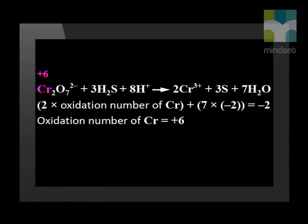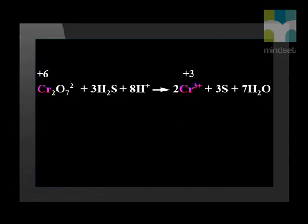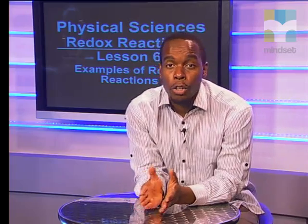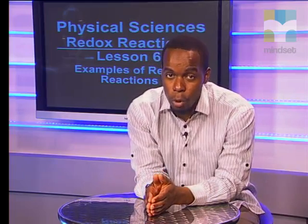Let's analyze this equation. We can calculate that the chromium atom in the dichromate ion has an oxidation number of +6, while on the product side the chromium ion now has an oxidation number of +3. Since the oxidation number of the chromium ion has become less positive, it has gained electrons. Therefore, the chromium ion has been reduced.